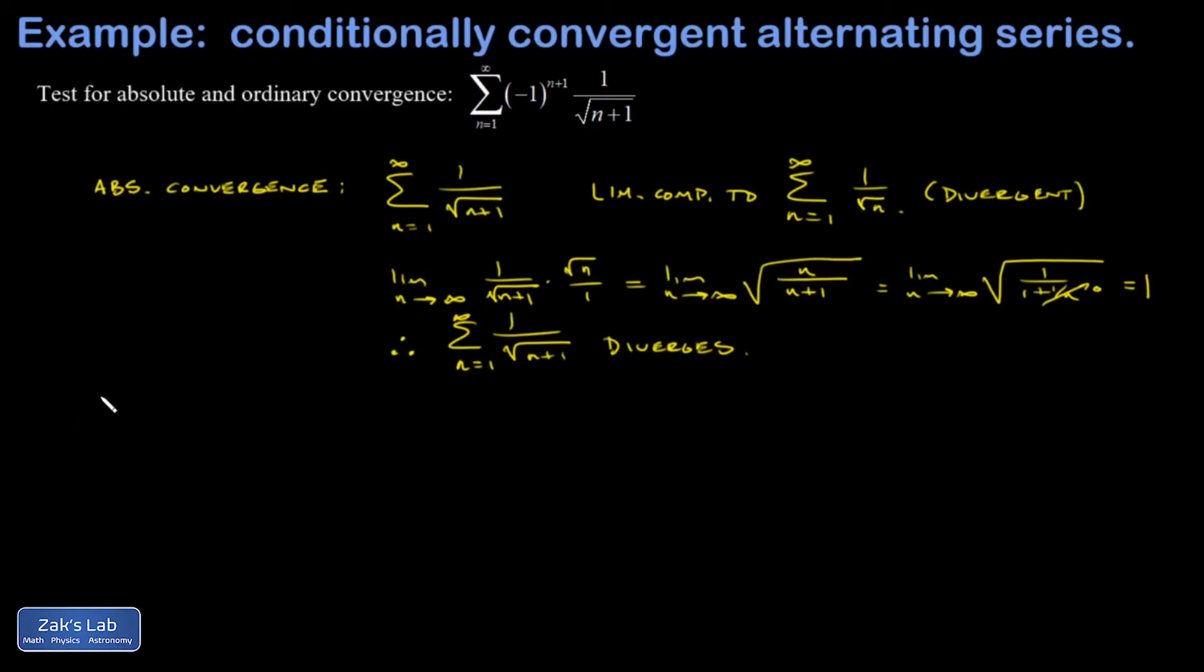So for that, we use the alternating series test. First, I need to show that the next term is always less than or equal to the previous term. And second, I need to show that the terms go to 0 in the large n limit. So let's look at that first condition.